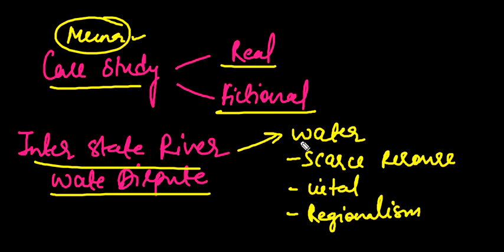So here is interstate river water dispute. What is happening here? Social dimension is a political dispute. So we can give economic dimension - water supply and demand.